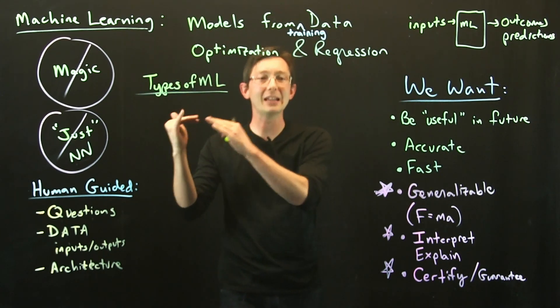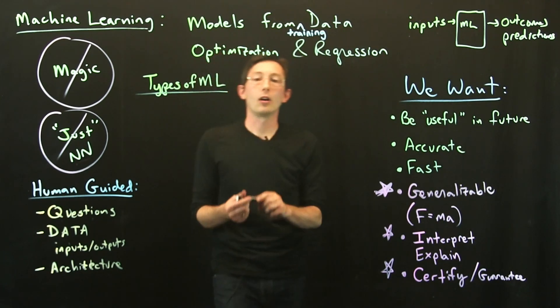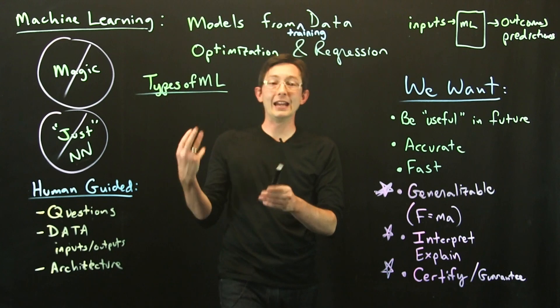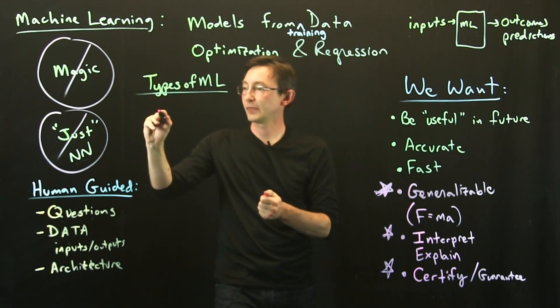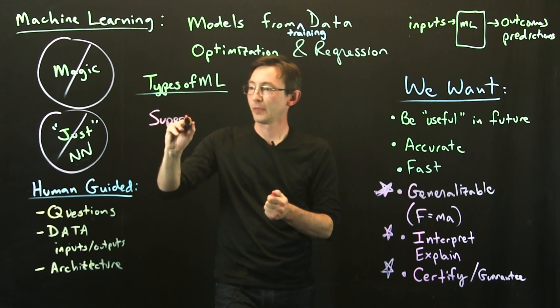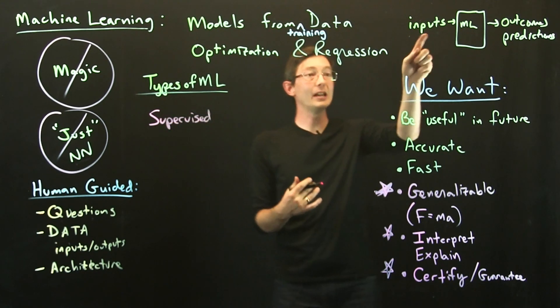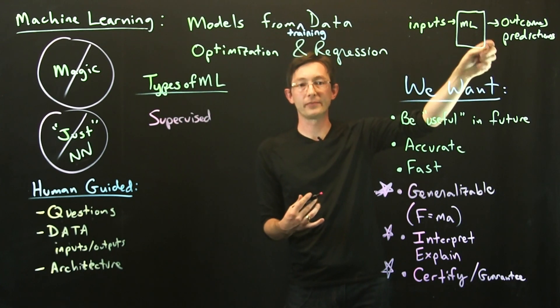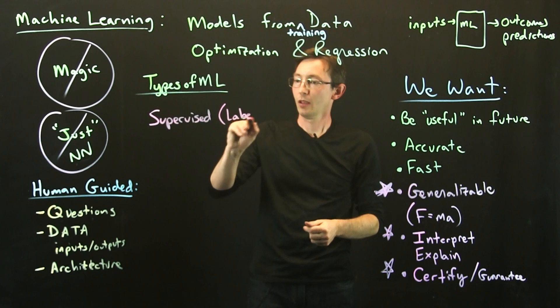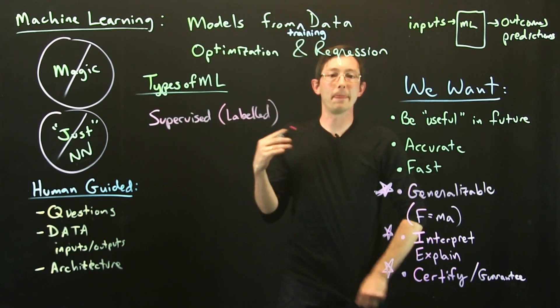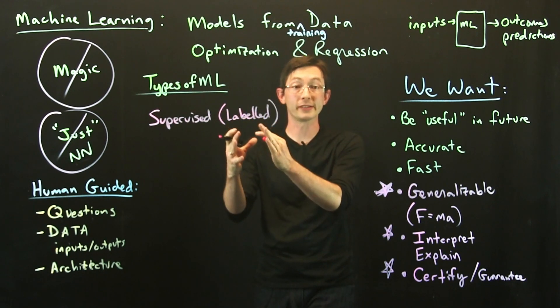The two big distinctions in machine learning, at least two of them, are whether or not your data or your algorithm is supervised or unsupervised. So supervised learning means that you have an expert who has labeled your data with outcomes, so you have labeled training data. This supervision comes in the form of labels that tell you for this set of inputs, this is what the outcome or the prediction is.